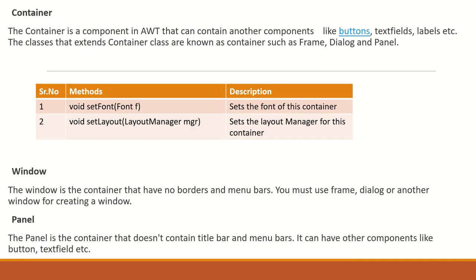The Container class contains all components of the Component class. A container is a component in AWT that can contain other components like buttons, text fields, and labels. Classes that extend the Container class are known as containers — such as Frame, Dialog, and Panel. The methods of the Container class are: setFont() to set the font, passing a Font class object; and setLayout() to set the layout, passing a LayoutManager class object.